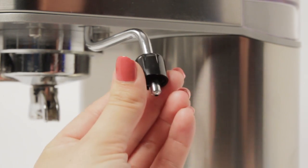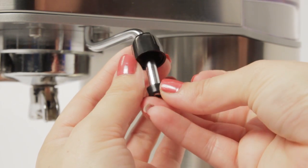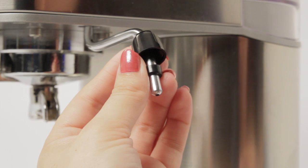To replace the wand, first put the cap nut over the steam pipe. Next, place the smaller hard plastic gasket on the steam pipe.